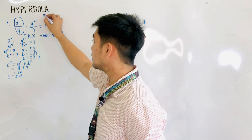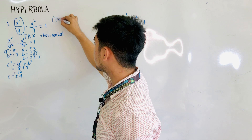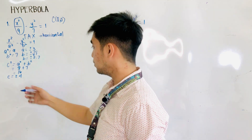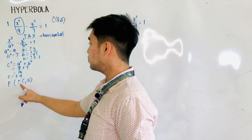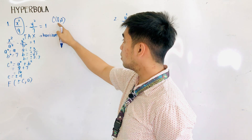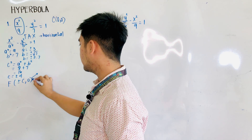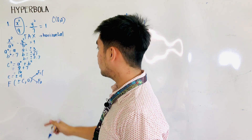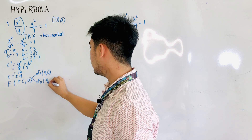Since the equation has only x squared and y squared, the center is located at the origin, which is (0, 0). Therefore, the foci are at plus or minus c, 0 — giving us F1 at (4, 0) and F2 at (-4, 0), since we are changing the x-coordinate of the center.